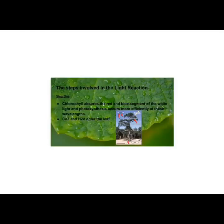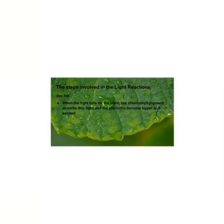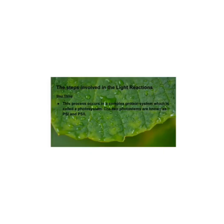The formation of ATP from the light energy is done in various steps that will be demonstrated. Chlorophyll absorbs the red and blue segments of white light, and photosynthesis occurs more efficiently at these wavelengths. CO2 and H2O also enter the leaf. When light falls on the plant, the chlorophyll pigment absorbs the light and the electrons become excited. This process occurs in a complex protein system called a photosystem.